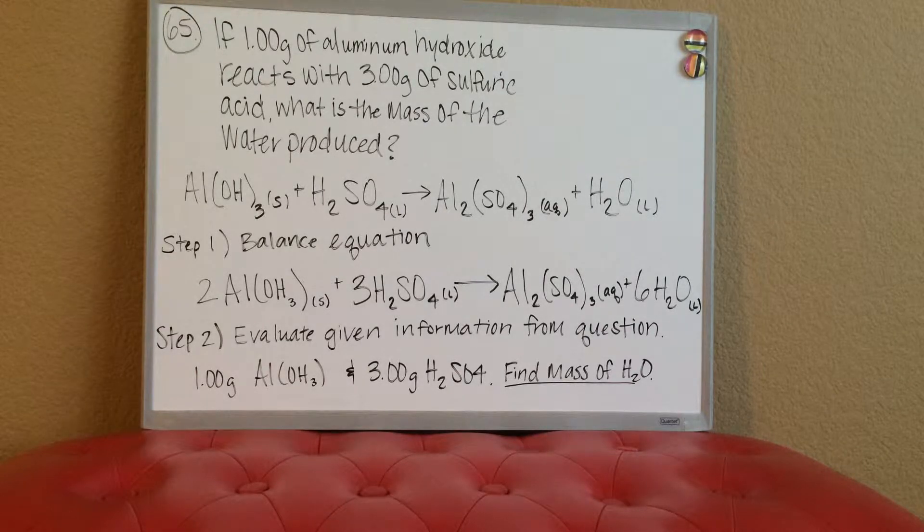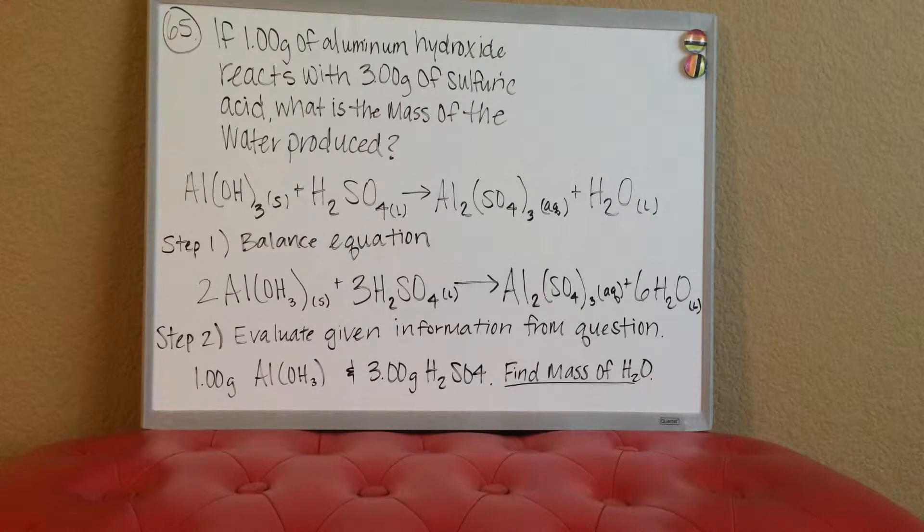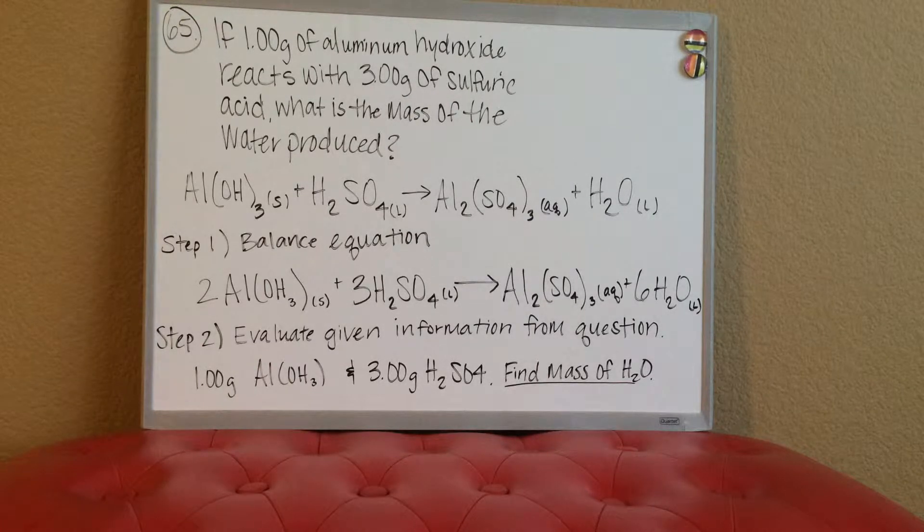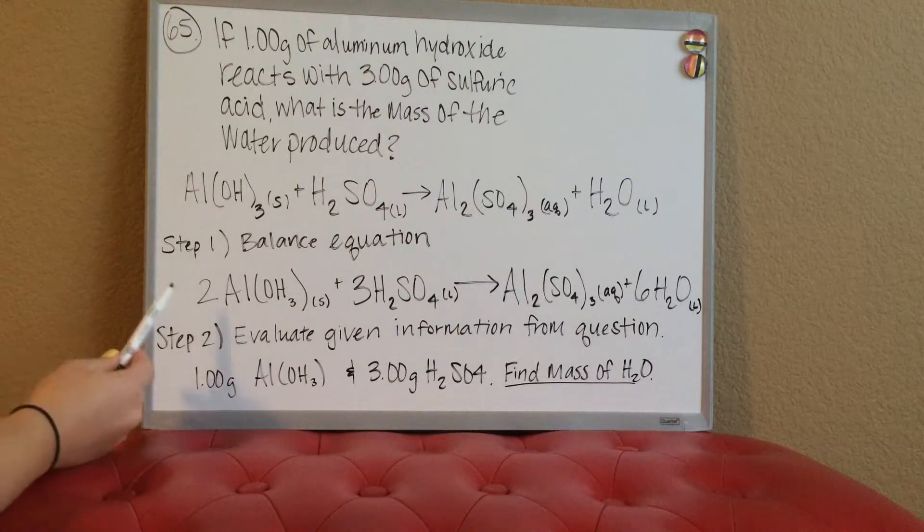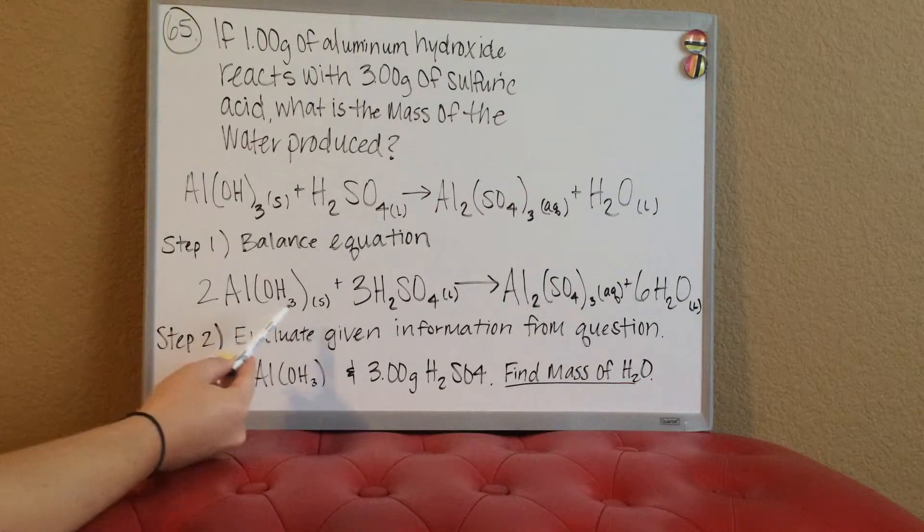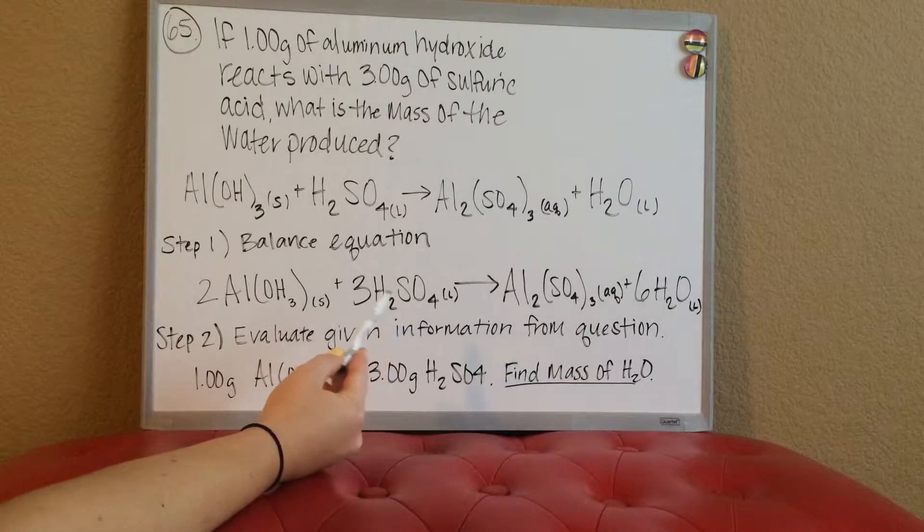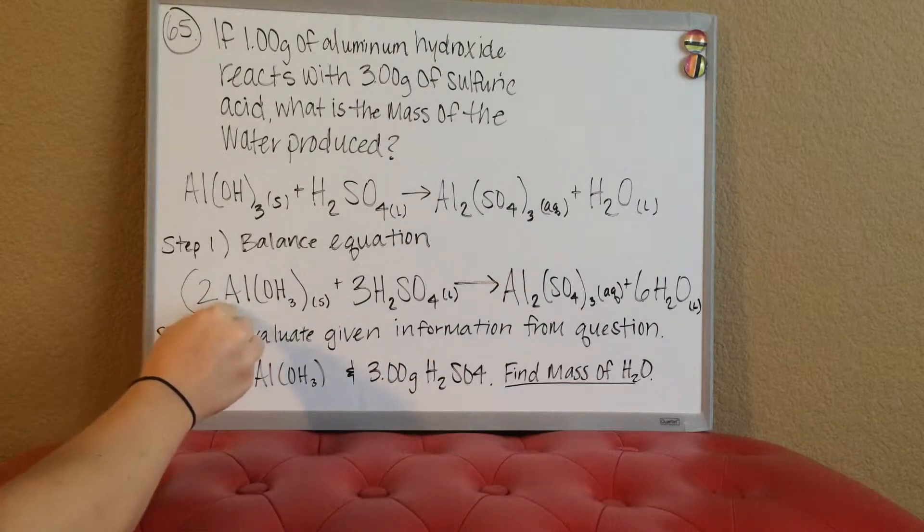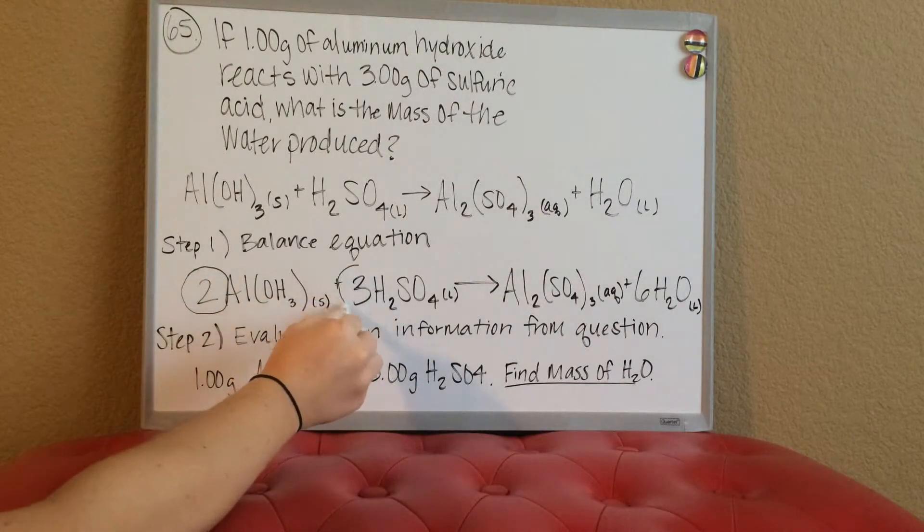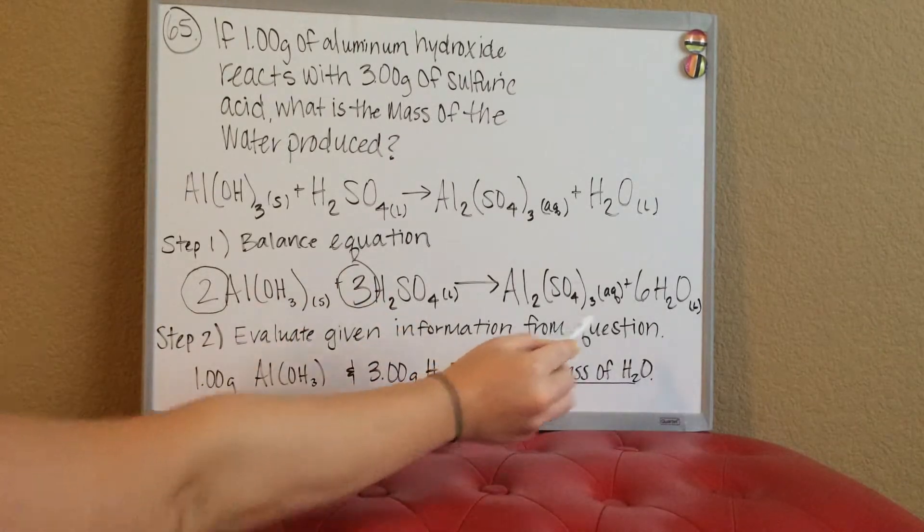The first step in evaluating this equation is you need to make sure it's balanced. So first step I've got here is balancing the equation. I went through and made sure all the coefficients were added properly. When it's balanced, you need to add the following coefficients here.